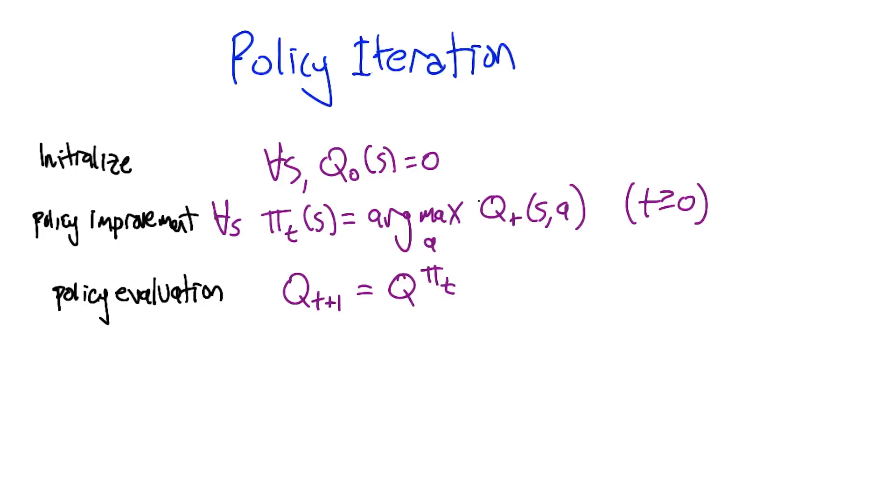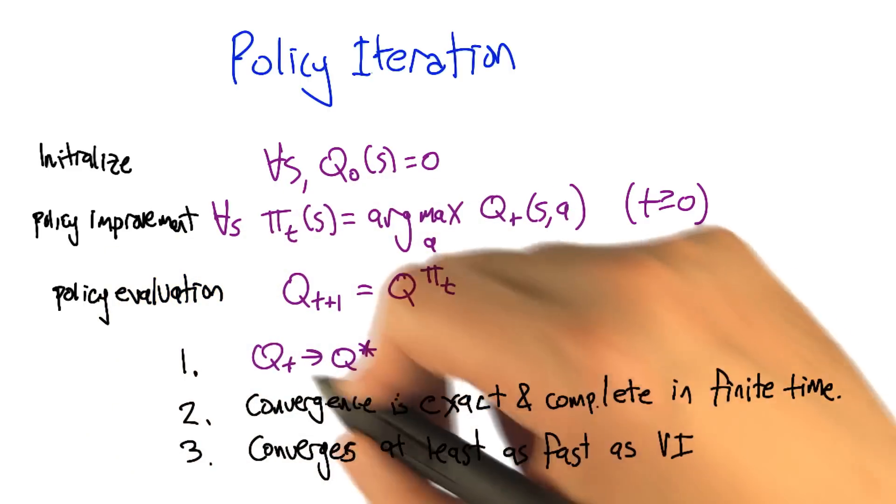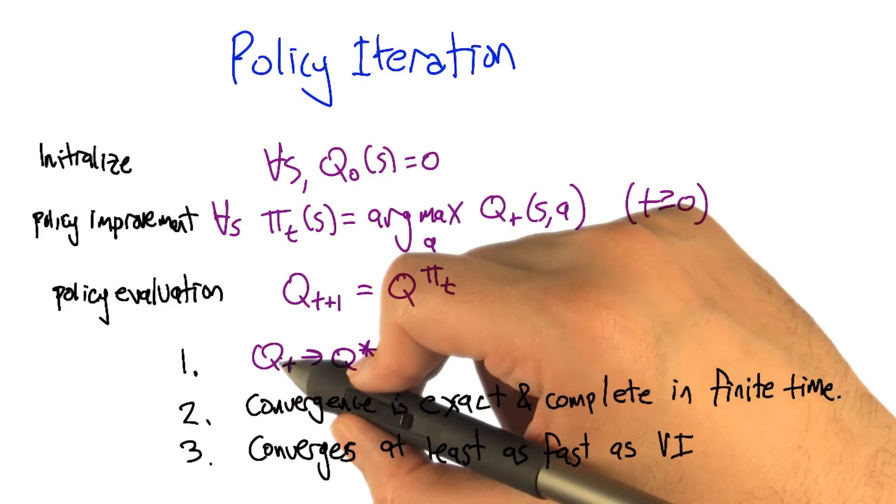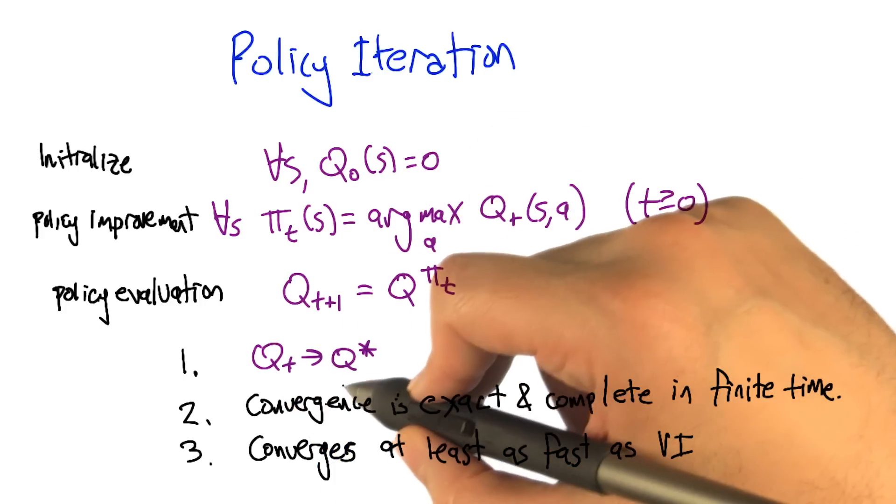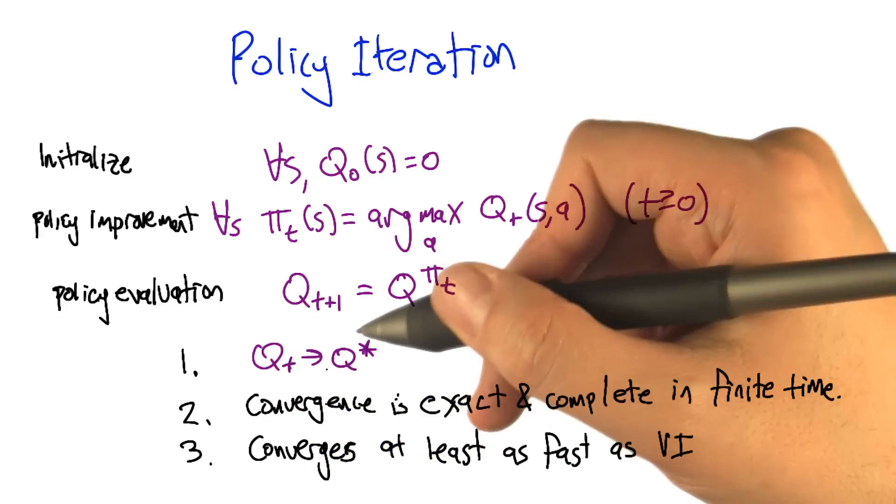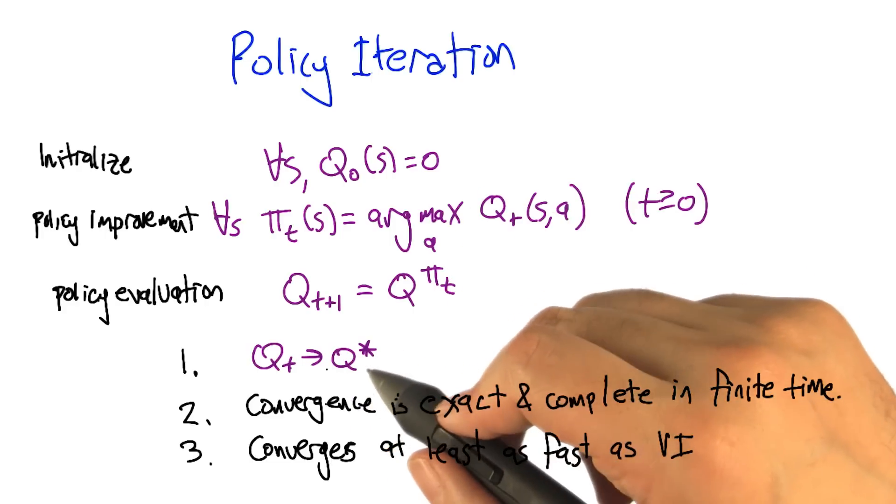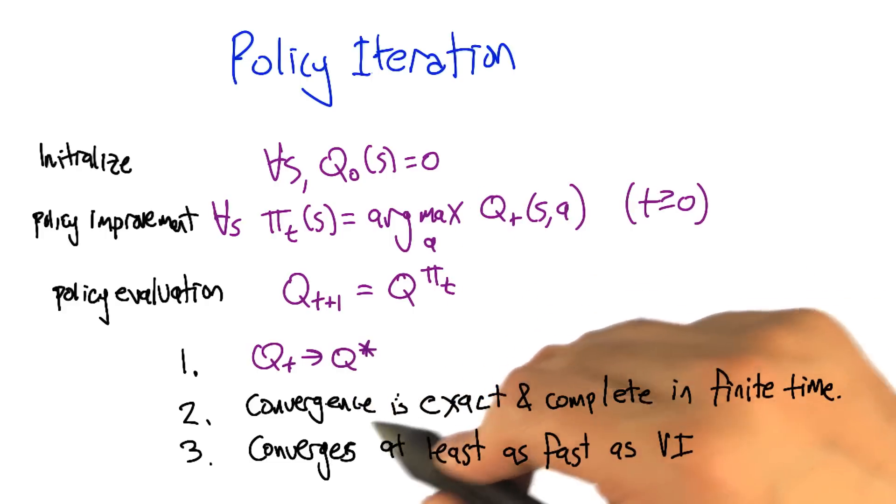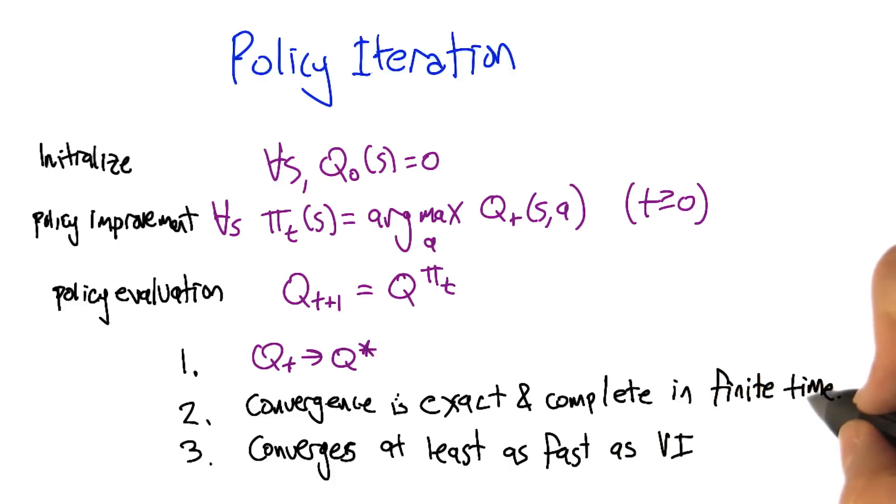Now the rinse repeat. Exactly. So unlike when I take a shower, we actually get convergence in finite time. So in particular, the sequence of Q functions that we get converges to Q star, which is good. That's like how policy iteration works. But even better, the convergence is exact and complete in finite time.